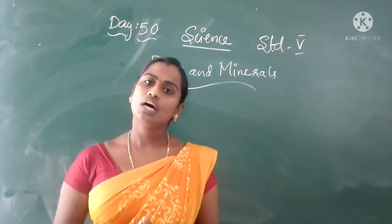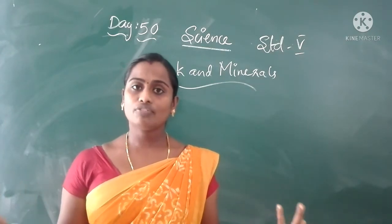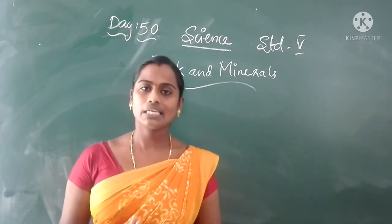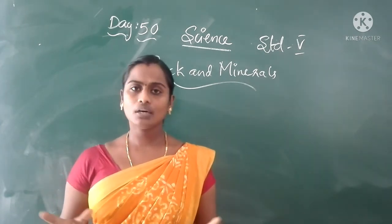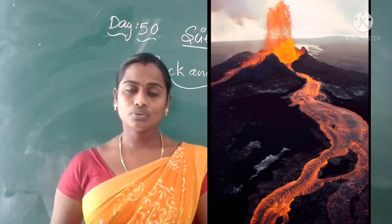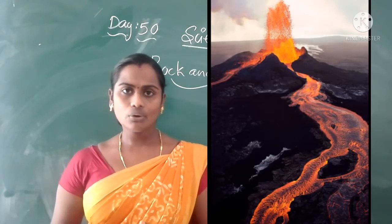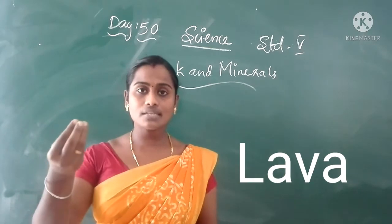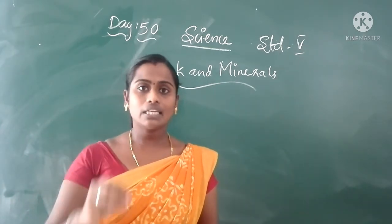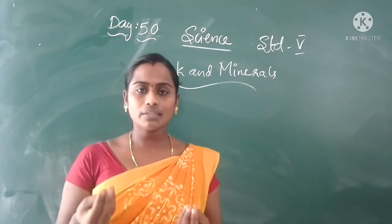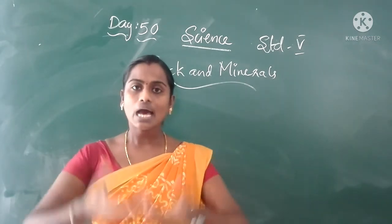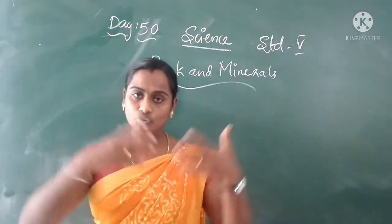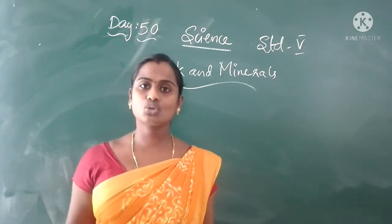These are the three types of rocks found in the earth's crust. First, let's discuss igneous rocks. All of you have heard about volcanoes and volcano eruptions. By the volcano eruption, lava comes out. Lava is the liquid form of magma that is present inside the earth. When a volcano erupts, the lava oozes out and flows to the outside in all directions.